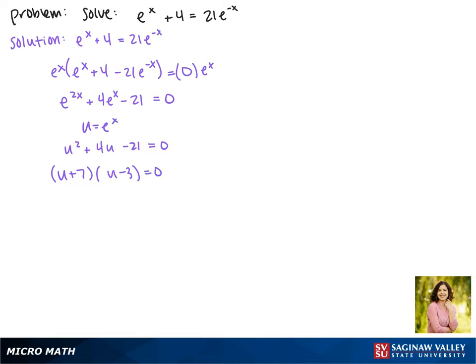Taking turns setting each of these equal to 0 gives us u plus 7 equals 0, or u minus 3 equals 0.